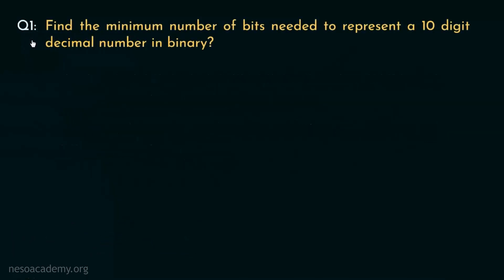Consider the first question: find the minimum number of bits required to represent a 10-digit decimal number in binary. During the previous session, we discussed a similar kind of problem; however, there we were given a specific decimal value. This is a bit different — instead of a specific decimal number, the number of digits is mentioned. So instead of solving the question right away, we will first try to understand the concept.